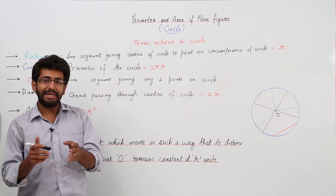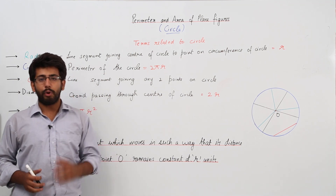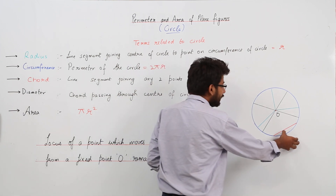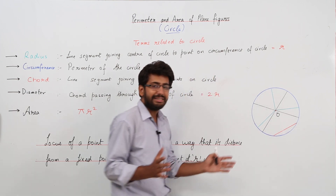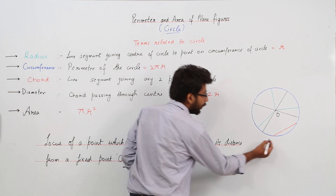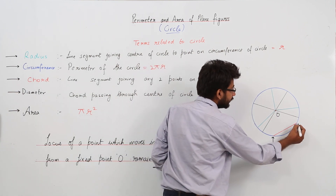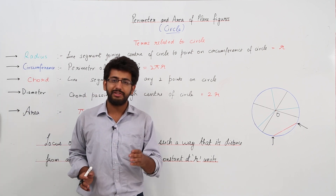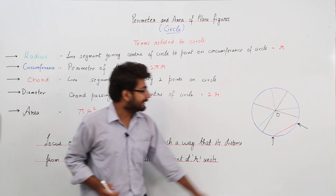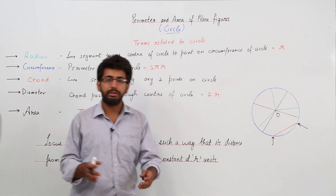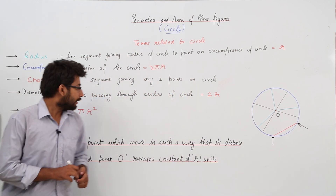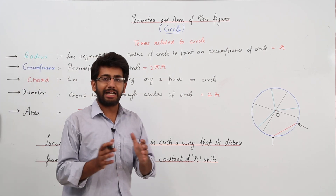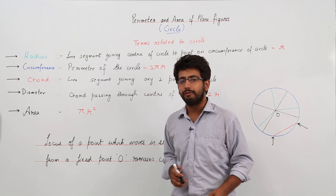What is a chord? A chord of a circle is any line segment which joins two points on the circumference of the circle. It is shown by the red colored line segment in this figure — this is one point and this is another point on the circumference, and when you join these two points, that line segment is known as the chord.